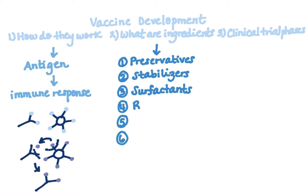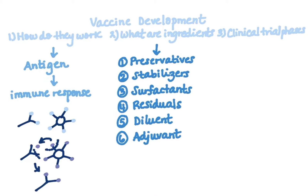Fourth, residuals — tiny amounts of substances used during manufacturing and production that are not active ingredients in the completed vaccine. Fifth, diluents — liquids used to dilute the vaccine to the correct concentration. Sixth, adjuvants — which improve the immune response to the vaccine.